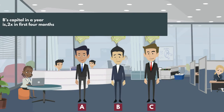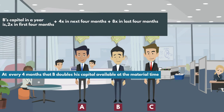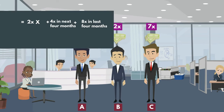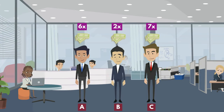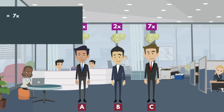B's capital over the year: 2x for first 4 months, 4x for next 4 months, 8x for last 4 months — because every 4 months B doubles his capital. So: 2x×4 + 4x×4 + 8x×4 = 56x. C's capital is untouched throughout, so: 7x×4 + 7x×4 + 7x×4 = 84x.